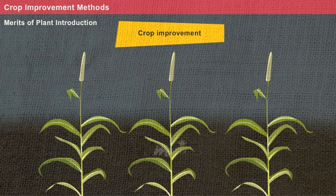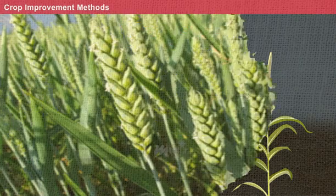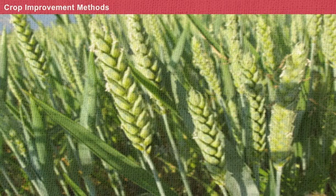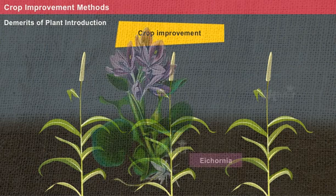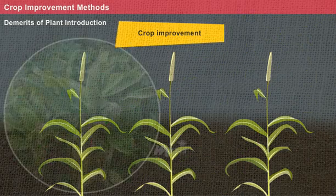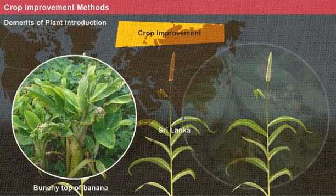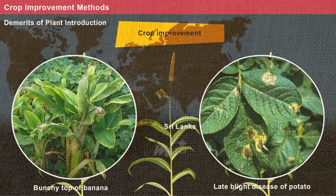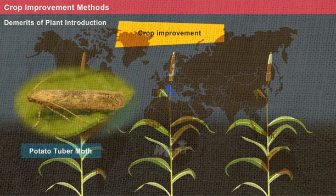Merits of plant introduction: it helps in releasing new high-yielding crop varieties, example IR8; it favours releasing new plant species, example Triticum aestivum. Demerits of plant introduction: emergence of new weeds like Ipomoea and Parthenium; outburst of new diseases like bunchy top of banana from Sri Lanka and late blight disease of potato from Europe; multiplication of new pests like potato tuber moth from Italy.